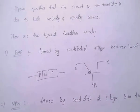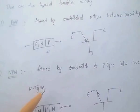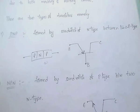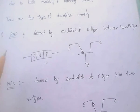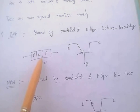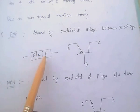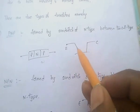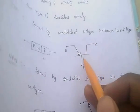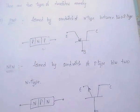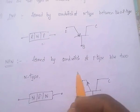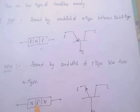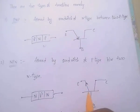There are two types of transistors: PNP transistors and NPN transistors. In a PNP transistor, it is formed by a sandwich of N-type between two P-types. And the NPN transistor is formed by a sandwich of P-type between two N-type materials.